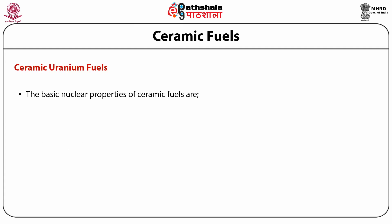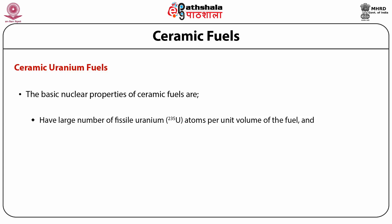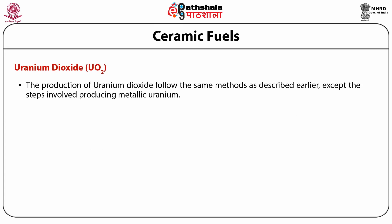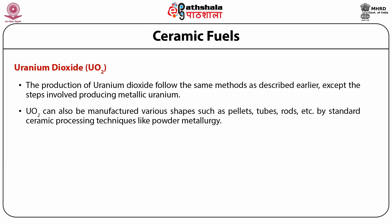The basic nuclear properties of ceramic fuels include: a large number of fissile uranium atoms per unit volume of fuel, and a small neutron absorption cross-section preserving neutron economy. Uranium dioxide can be manufactured into various shapes such as pellets, tubes, rods, etc., by standard ceramic processing techniques like powder metallurgy.